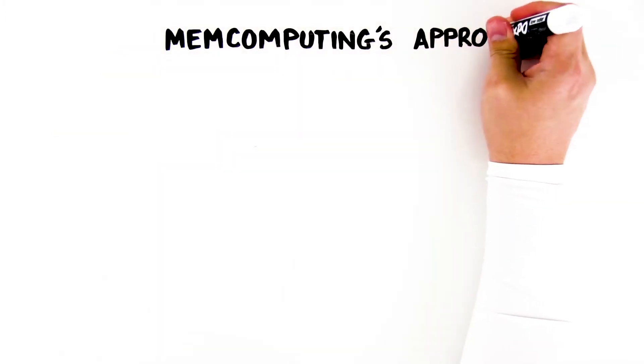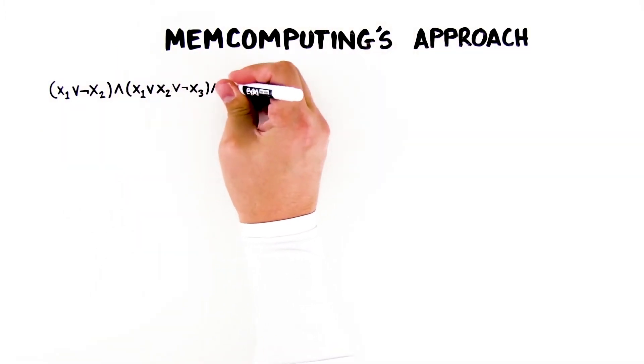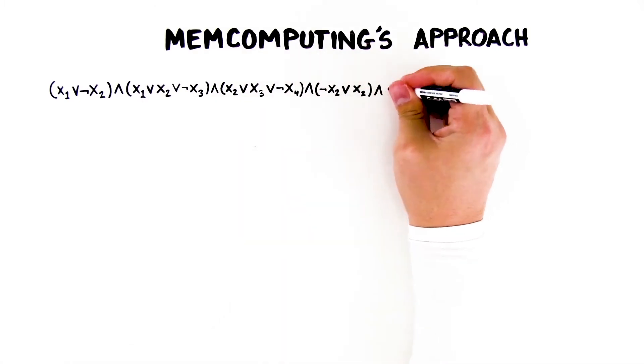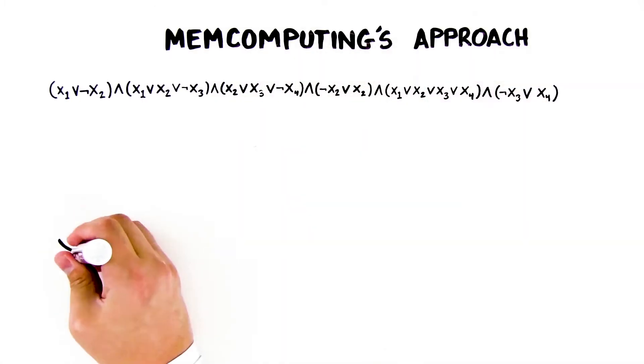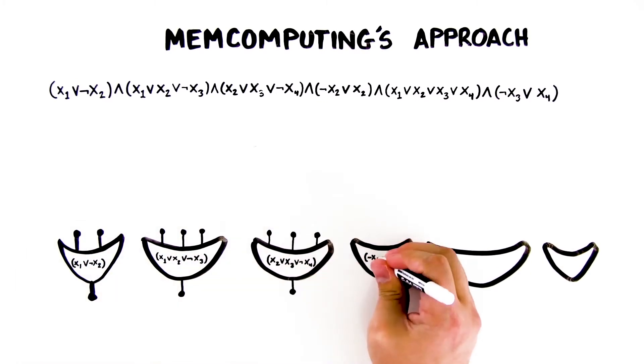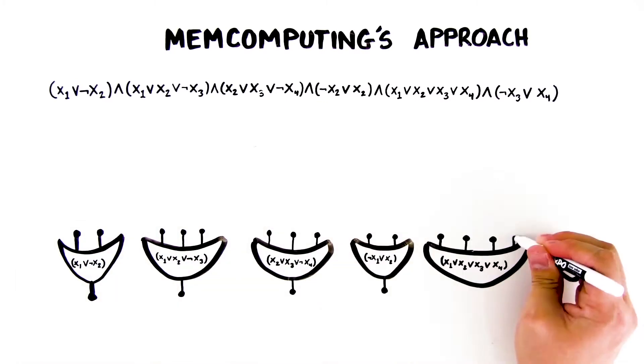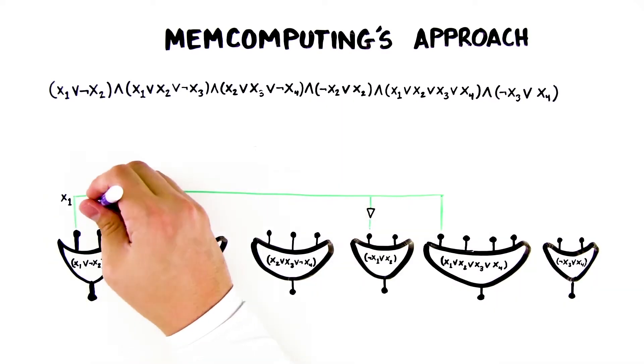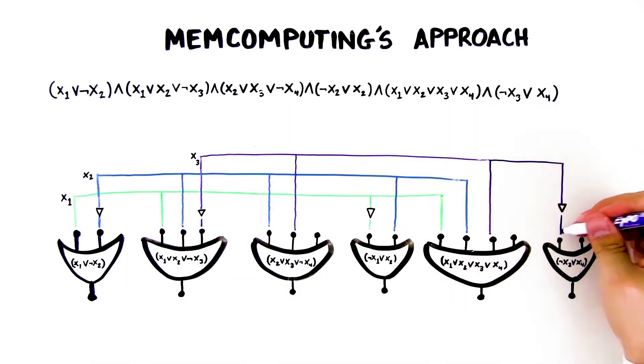Our virtual MEM computing machine configures itself into a circuit representing the mathematical equation. Each clause maps directly onto our proprietary self-organizing logic gates. In this case, OR gates. Just like branch-and-bound, we solve for x1 through x4 when each clause equals 1.